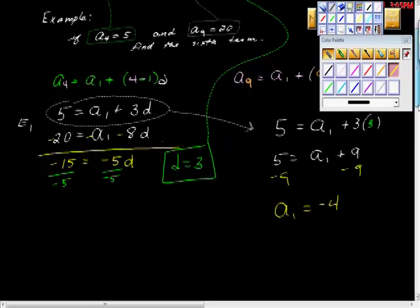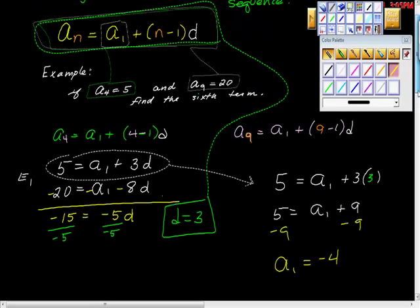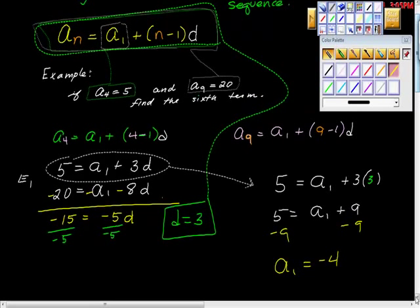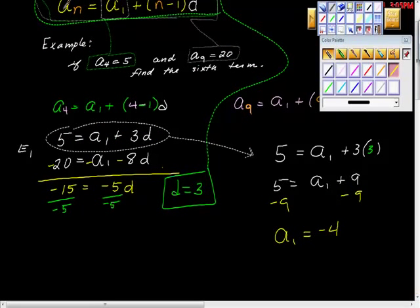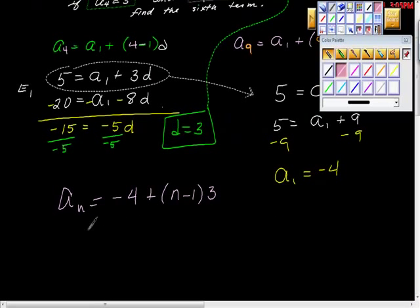So look at this. We're almost done. This has gotten really easy now. We have the general solution. The nth term is equal to a sub 1, which is negative 4, so it's equal to negative 4 plus n minus 1 times d. But d is 3, so times 3.